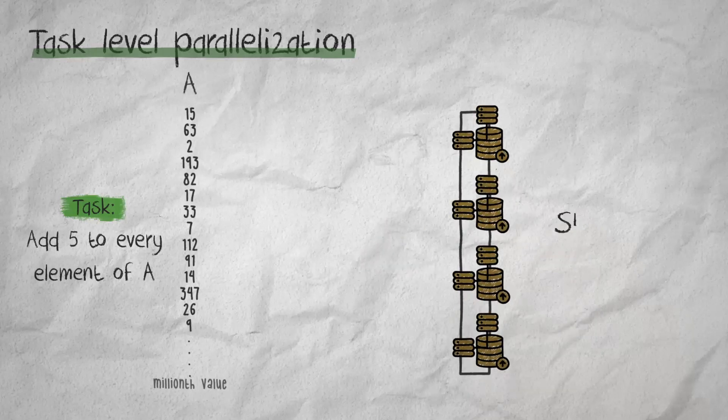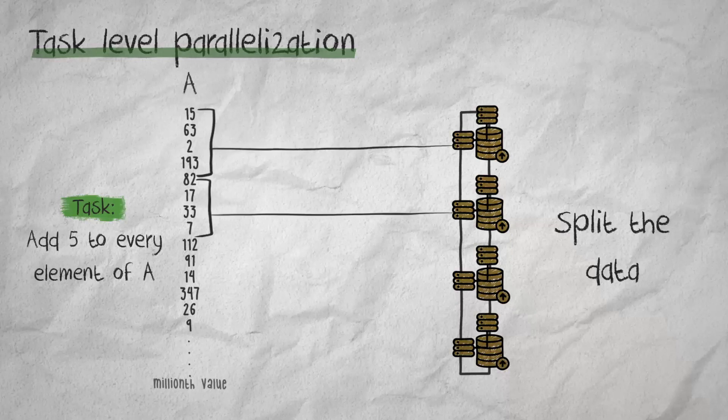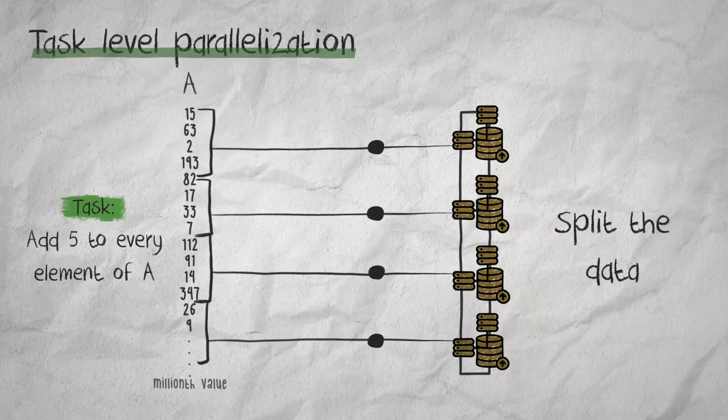The first step in task level parallelization is to split the data between the different nodes. The best way to do that in this scenario would be to split the data into equal parts.